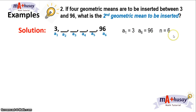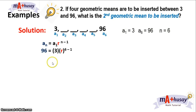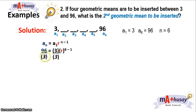Because we're inserting four geometric means between 3 and 96, to solve for the second geometric mean, we use the geometric sequence formula. Substituting these values: 96 equals 3 times r raised to 6 minus 1. Dividing both sides by 3, we get 96 divided by 3 is 32, which equals r to the fifth power.